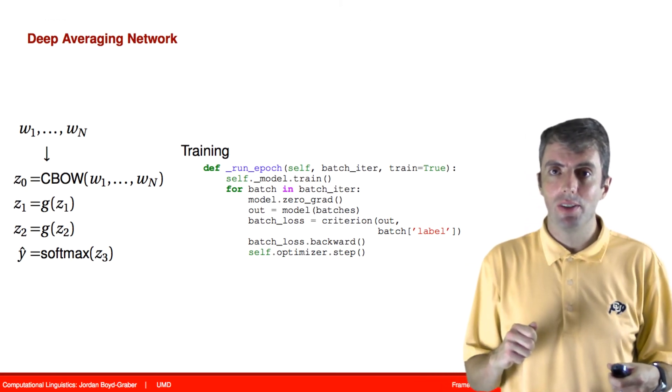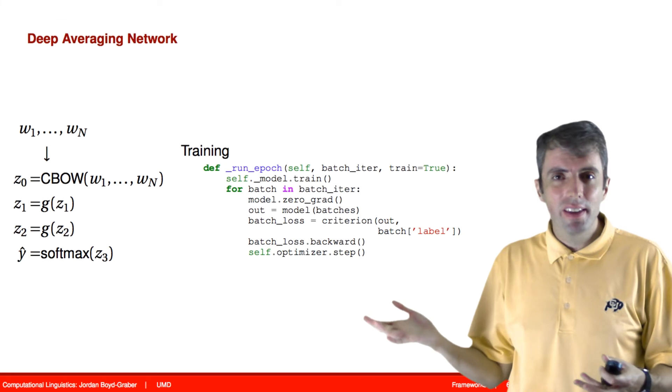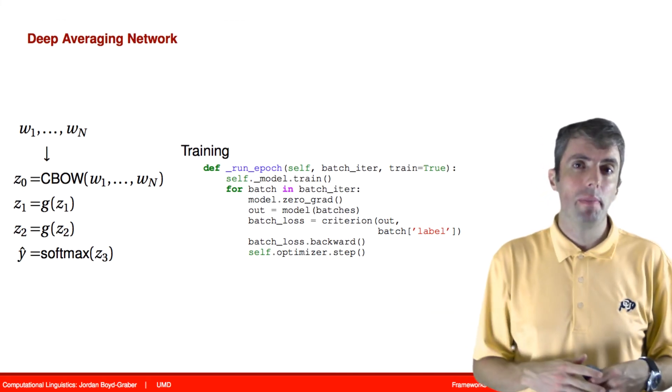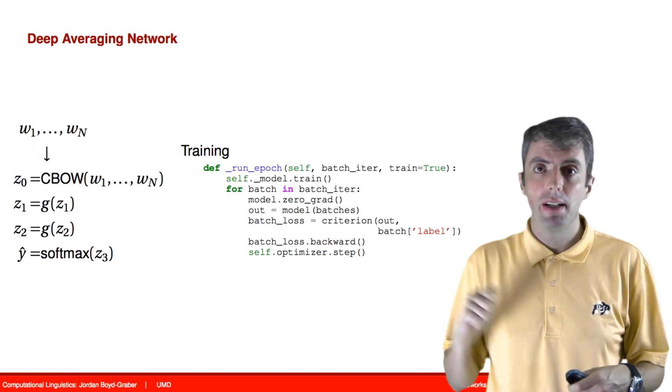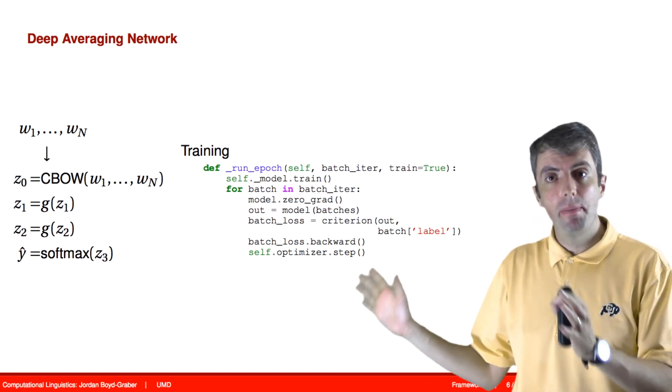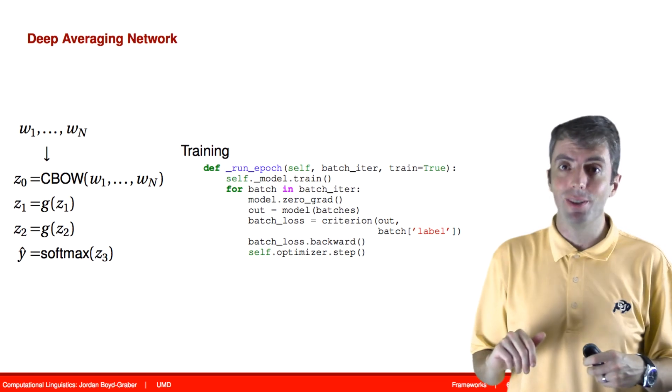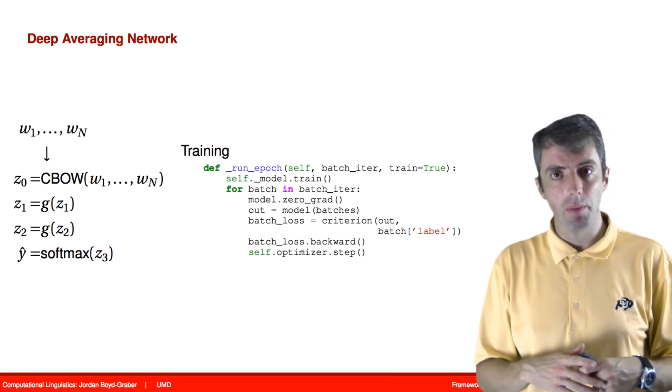There are other things you can do to this model to make it a little bit better. You can do batch normalization to improve things. You can do dropout to improve things. But this is the basics of the model that you need, and you can still get relatively good results with this very, very simple model.